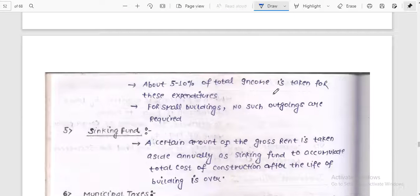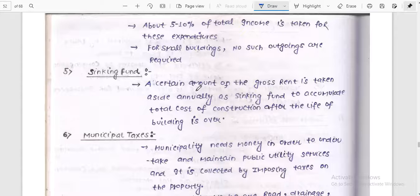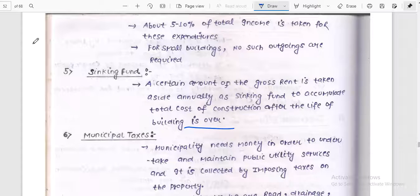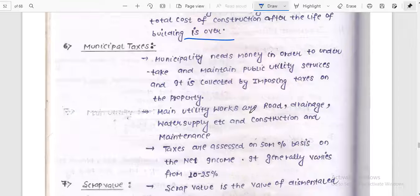Sinking fund. A certain amount of gross rent is taken aside annually as a sinking fund to accumulate total cost of construction after the life of the building is over. So suppose a building is constructed. This sinking fund is for the cost of construction.